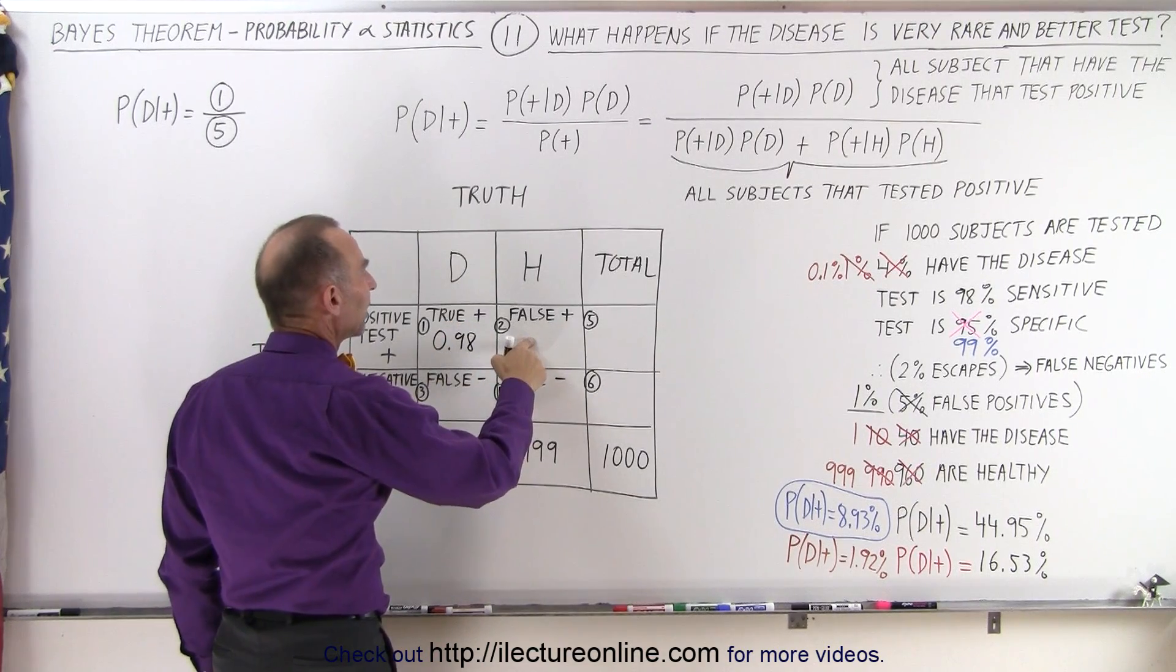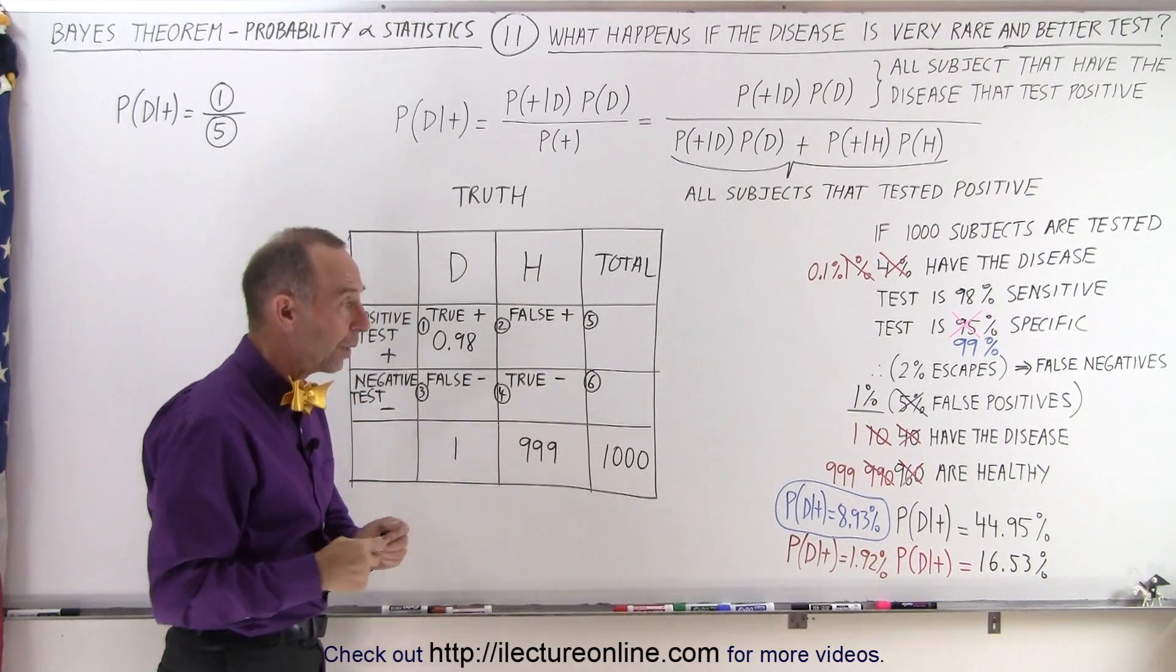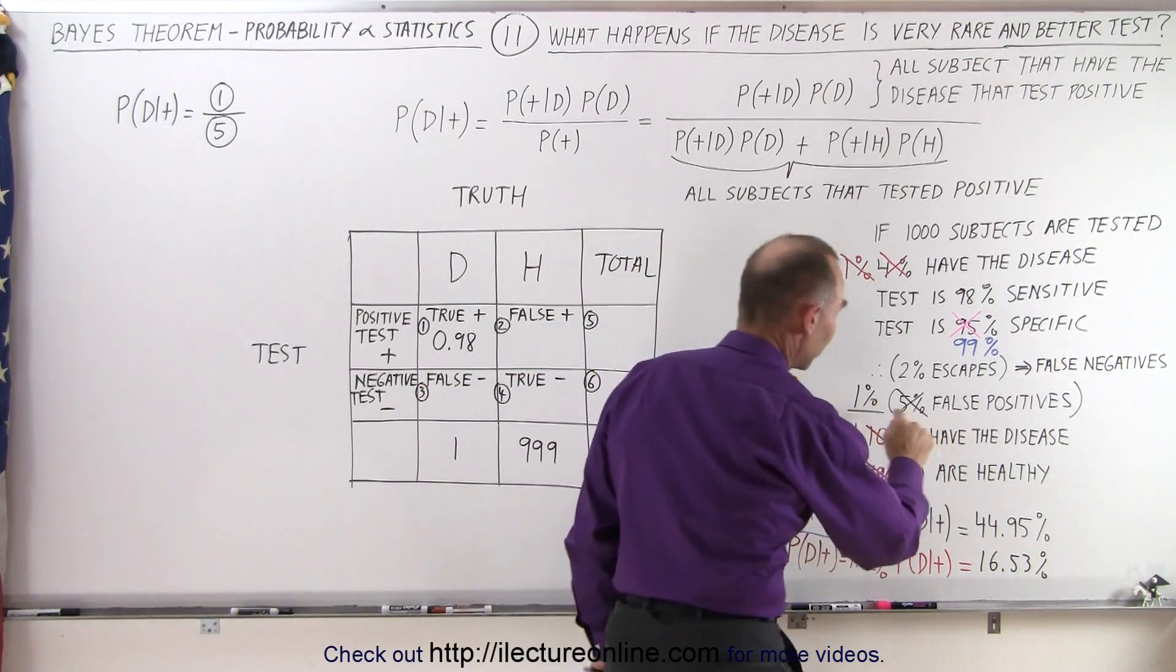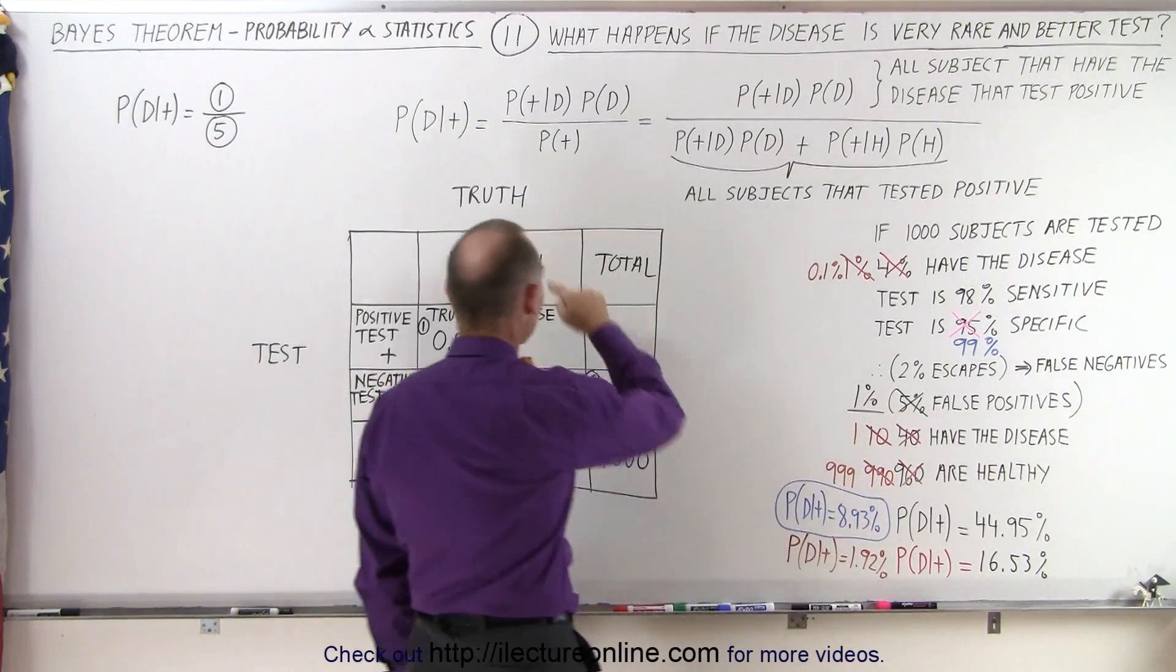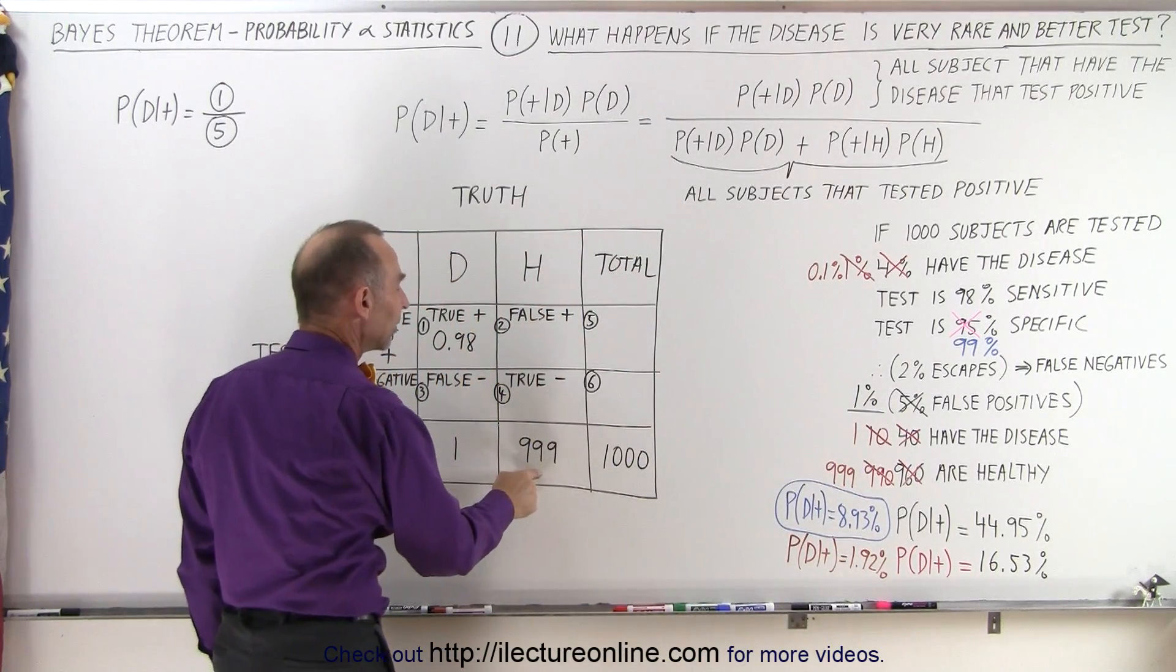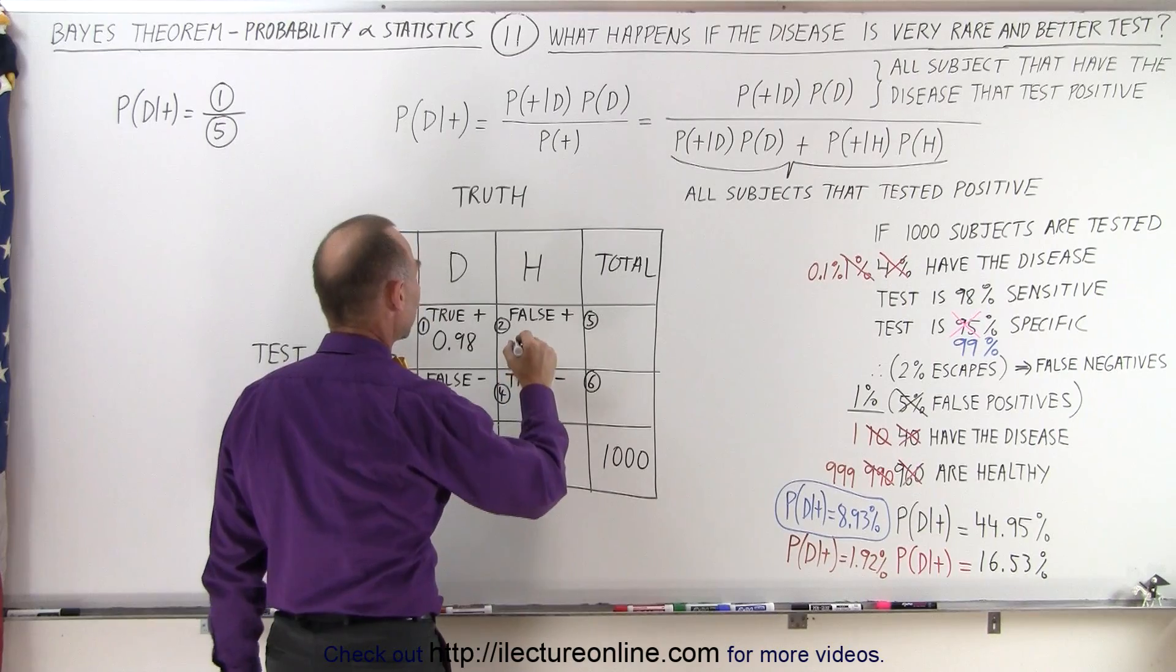What is the probability that they will test false? Well, we have to look for false positives. It's 1% of those that are healthy. Since 999 are healthy, 1% of that would be 9.99.